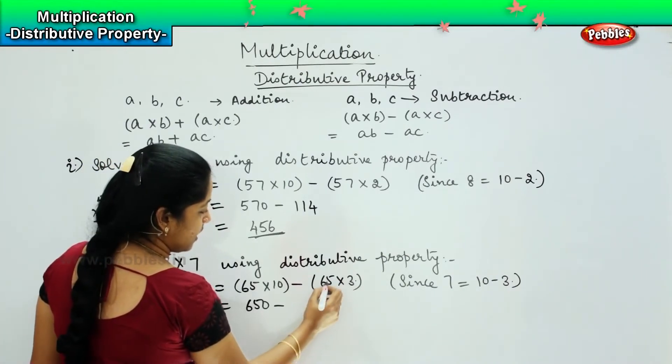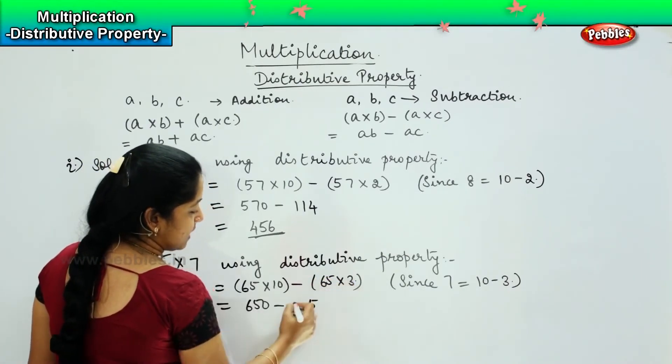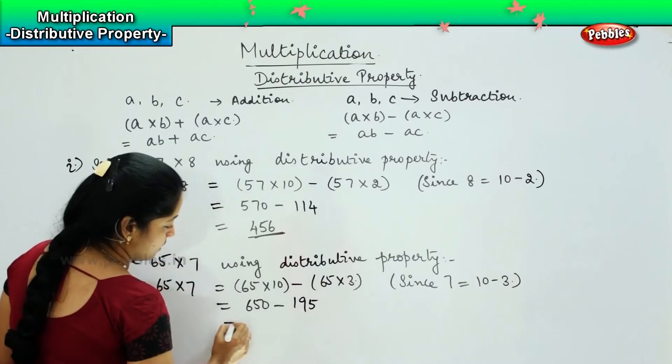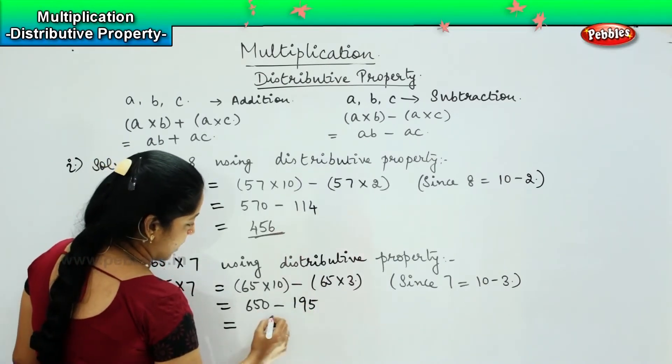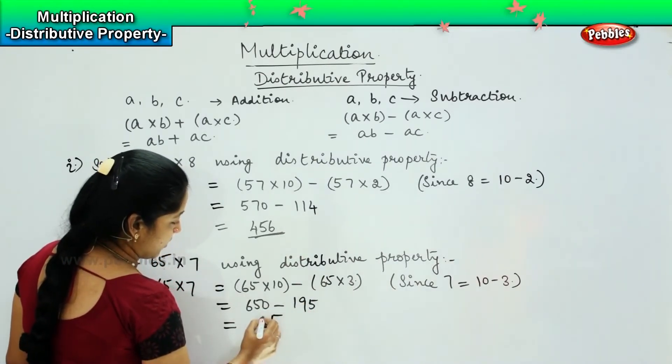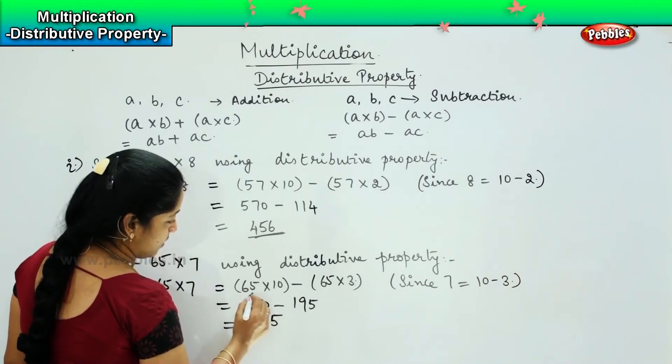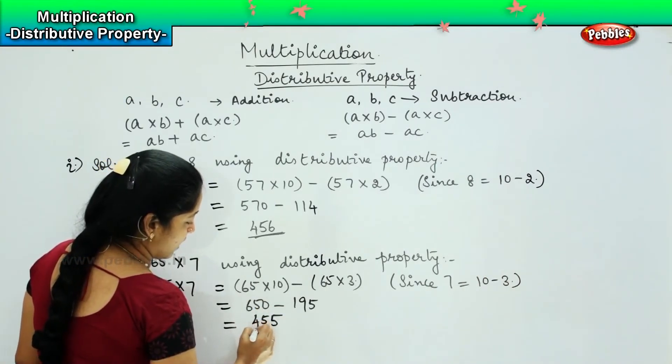So, 5 times 3 is 15, carry 1. 6 times 3 is 18 plus 1 is 19. So, the answer is 455.